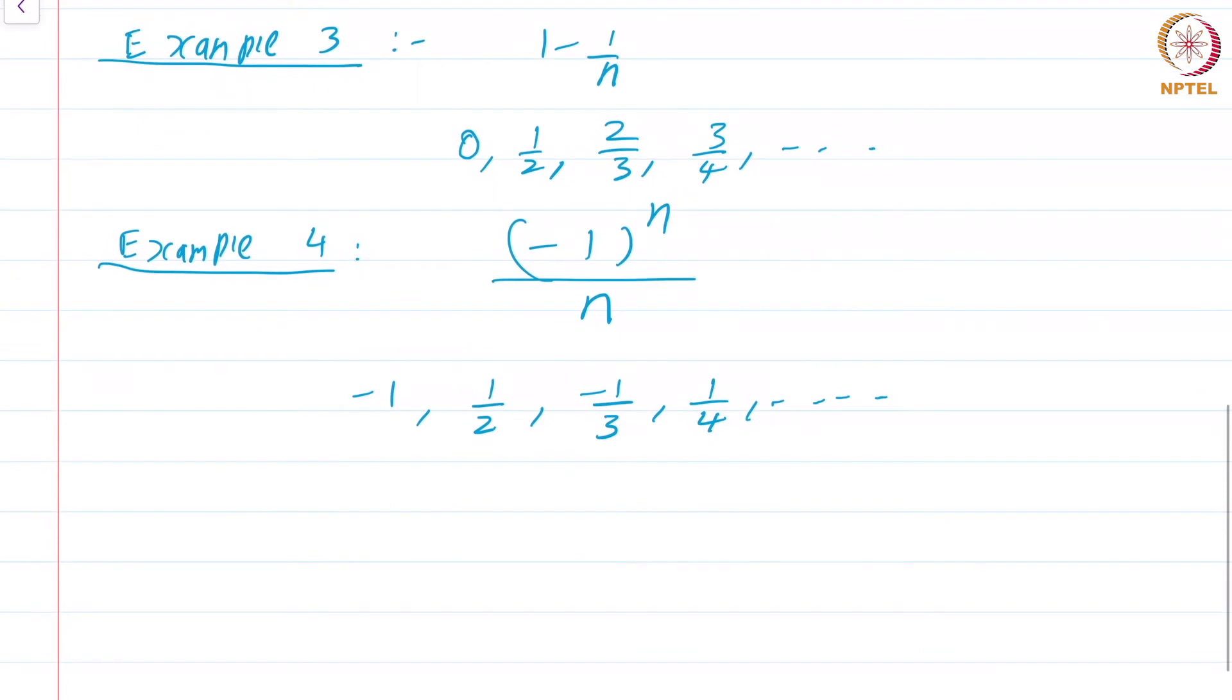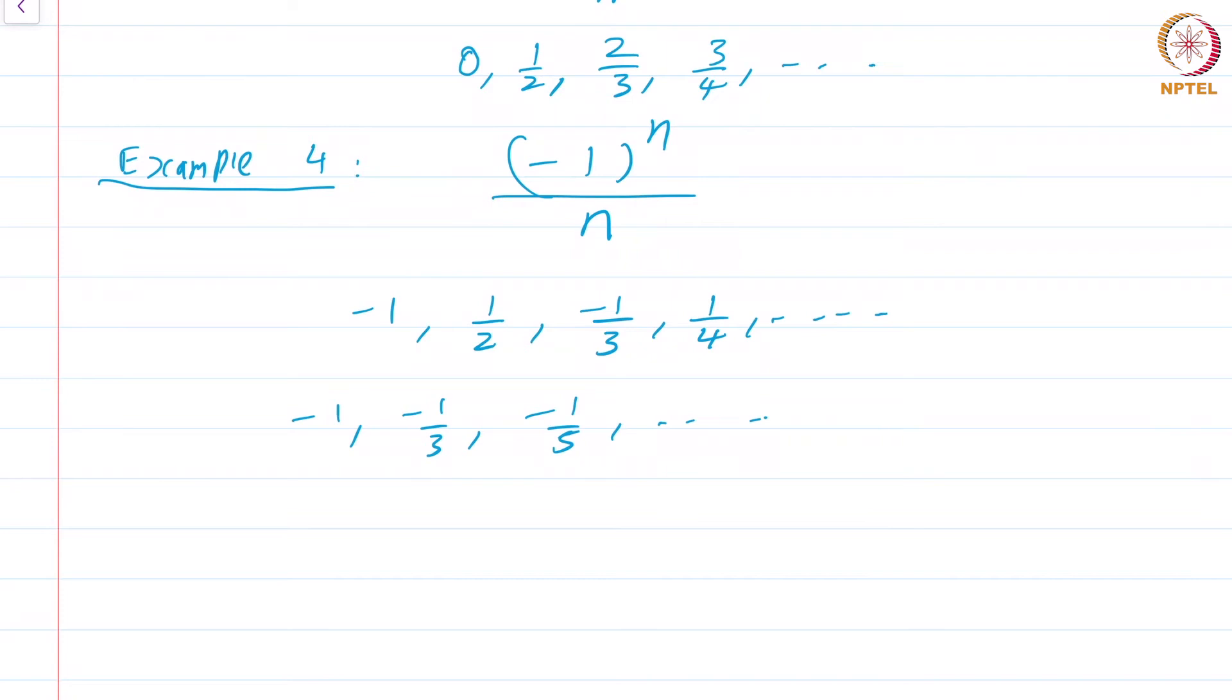If you collect together all the terms where n is odd, you get the sequence minus 1, minus 1 by 3, minus 1 by 5, and so on. If you collect all the even terms, you get half, 1 by 4, 1 by 6, and so on. Both these subsequences seem to be approaching 0, and so does the main sequence minus 1 power n by n. One common mistake that students make is to think that if a sequence is convergent, it cannot jump around like this. It must either be increasing or decreasing at least after a point. That is not true.